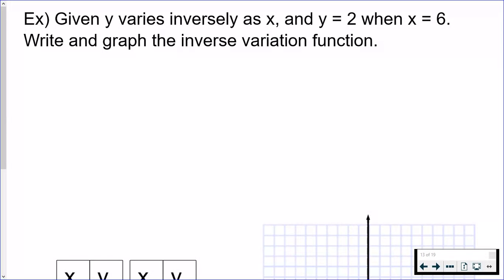So if you think back to those direct variations, it was just the left-hand side equals the right-hand side straight across. But with inversely, you're actually going to have to move that variable on the right-hand side to the denominator.